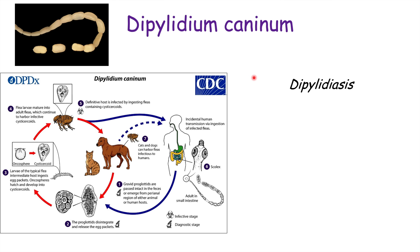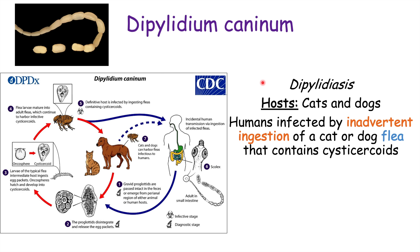The condition of being infected with Dipylidium caninum is known as dipylidiasis. The primary hosts are cats and dogs, and the intermediate host in this case would be fleas. Humans become infected by inadvertent ingestion of a cat or dog flea that contains cysticercoids.